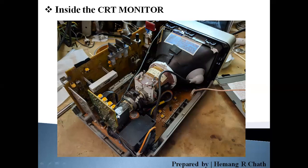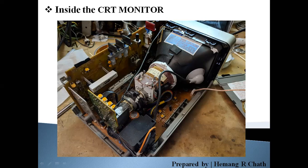The signal is received by the cathode ray tube and, according to the CRT controller, the electronic gun transmits an electronic beam. This electronic beam is then directed through the components — horizontal deflection plate and vertical deflection plate — to carry the video information.